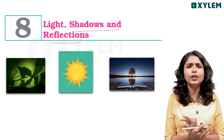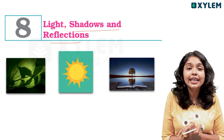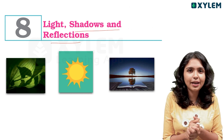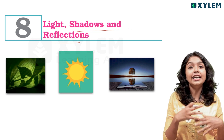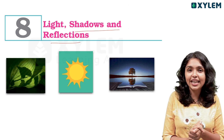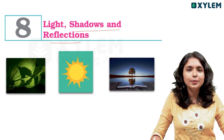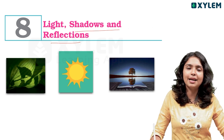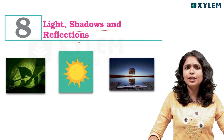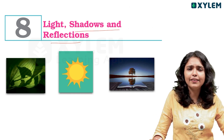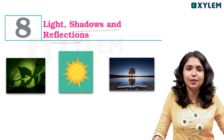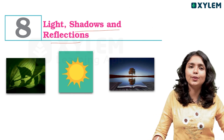The example is the sun. Luminous objects emit light of their own. Non-luminous objects do not emit light of their own.